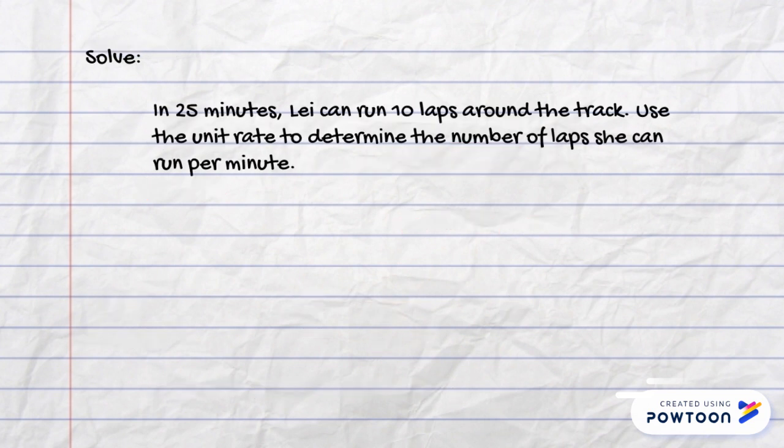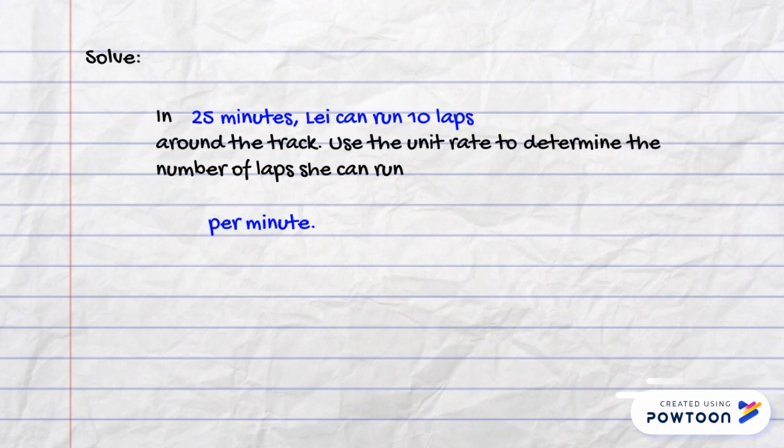Let's try another. Feel free to press pause to try this on your own, or continue on with the video. In 25 minutes, Lake can run 10 laps around the track. Use the unit rate to determine the number of laps she can run per minute. The important information here is she can run 10 laps in 25 minutes, and we are looking for a per minute unit rate.